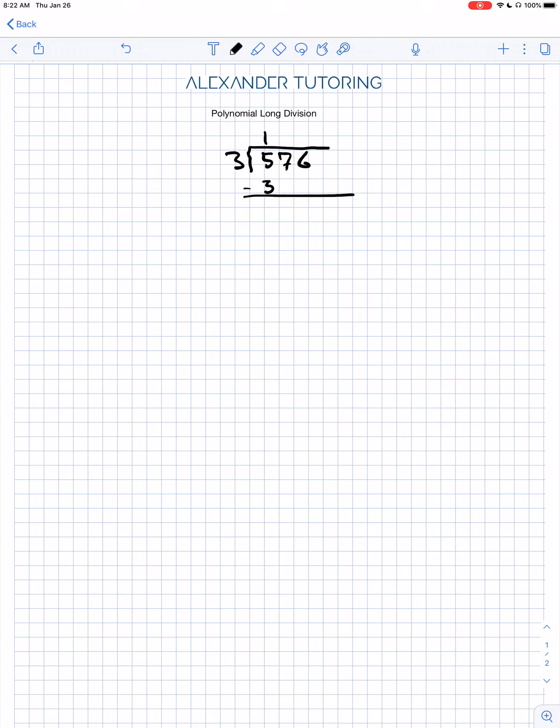We draw a line underneath. We subtract. 5 minus 3 is 2. Then we bring down the next term or number, which in this case is a 7, to get 27. And then we start the process over. 3 divides into 27 nine times. 3 times 9 is 27.